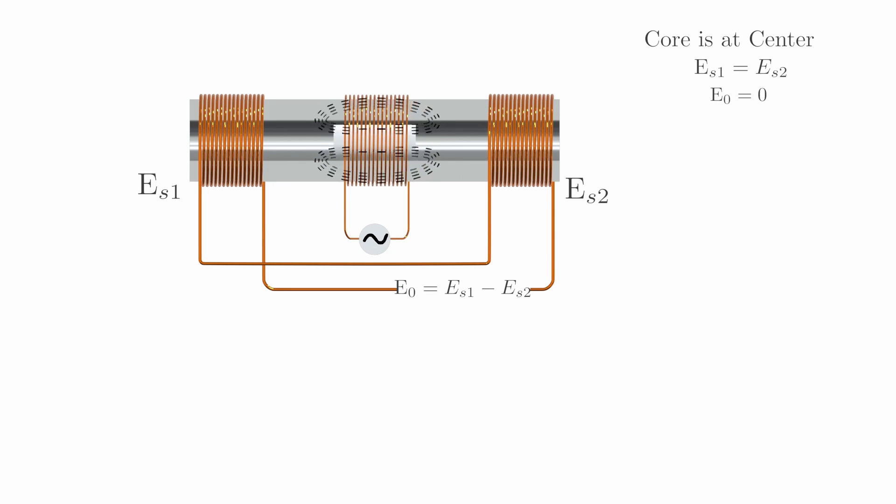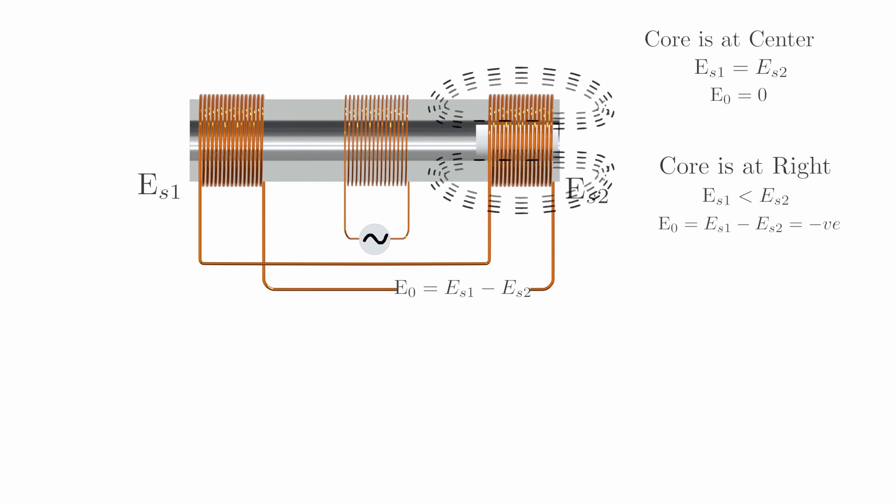If we move the core towards the right, the flux linking with the second secondary coil, S2, becomes greater than the flux linking with the first secondary coil, S1. Consequently, the EMF induced in S2 becomes greater than the EMF induced in S1, resulting in a negative net EMF.